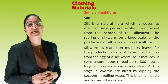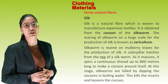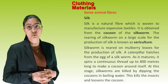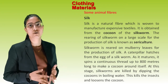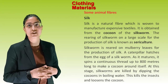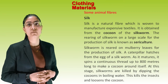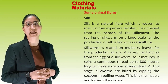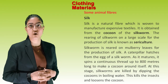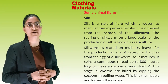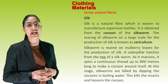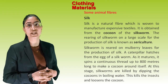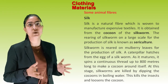Animal Fibres — Silk: Silk is a natural fibre which is woven to manufacture expensive textiles. It is obtained from the cocoon of the silkworm. The rearing of silkworms on a large scale for the production of silk is known as sericulture. Silkworms are reared on mulberry leaves. A caterpillar hatches from the egg of a silkworm, and as it matures, it spins a continuous thread up to 800 metres long to make a cocoon around itself. Silkworms are then killed by dipping the cocoon in boiling water, which loosens the cocoon.